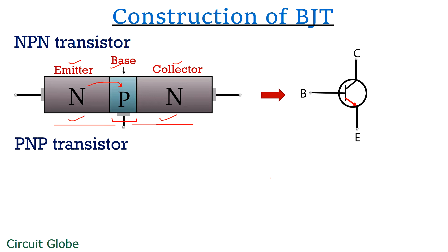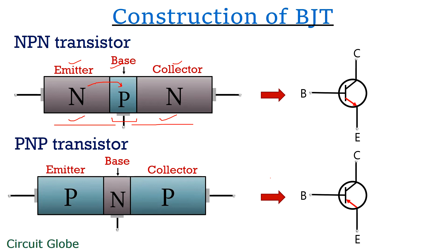In PNP transistors, all three terminals — emitter, base, and collector — are the same, but in this case an N-type semiconductor material is sandwiched between two P-type semiconductor materials. In NPN transistors, electrons are the majority charge carriers and the emitter supplies electrons to the collector region. But in PNP transistors, holes are the majority charge carriers and are responsible for conduction.